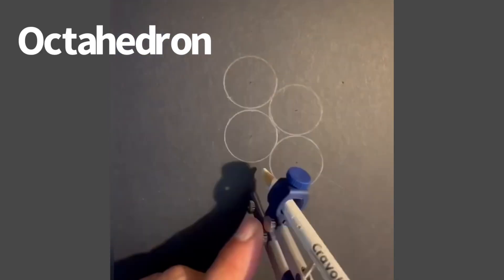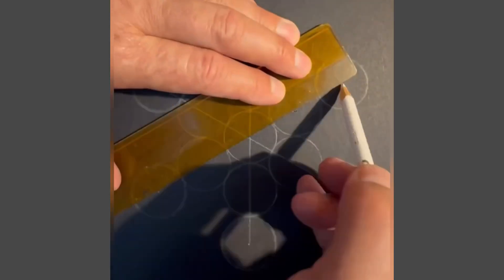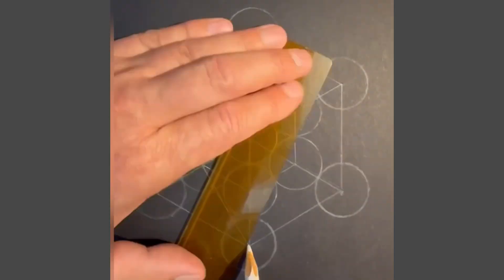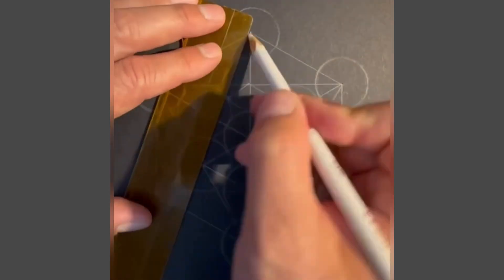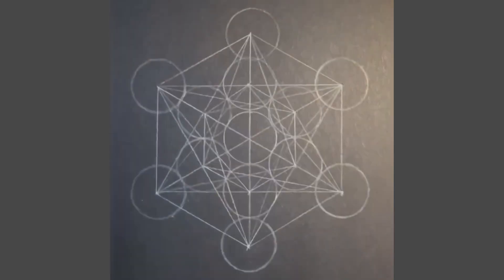To draw the octahedron, start with 13 circles arranged in this pattern which will form the fruit of life. Connect all the middles of all the circles and you will create a Metatron's cube. You'll do this by drawing all the lines necessary to complete this stage.